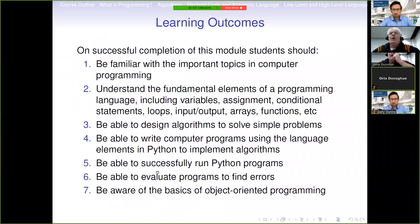All of you have got a module descriptor, and as part of the module descriptor we list out the learning outcomes. On successful completion of this module, students should be familiar with important topics in computer programming, understand the fundamental elements of a programming language, be able to design algorithms, be able to write computer programs in Python, be able to successfully run Python programs, be able to evaluate programs to find errors, and be aware of the basics of object-oriented programming. Those are the things that we would expect students to know by the time that the module is over.